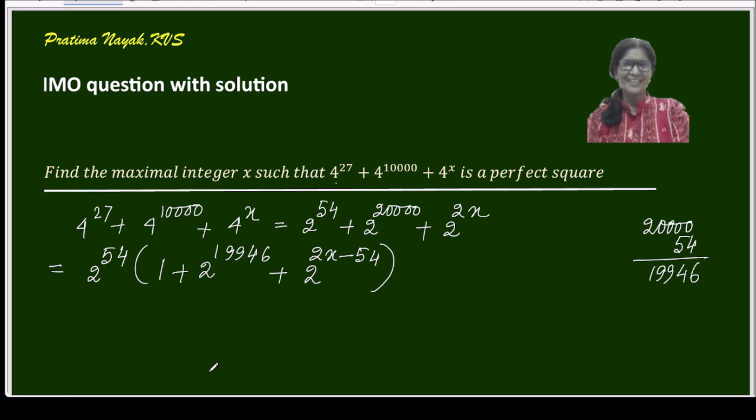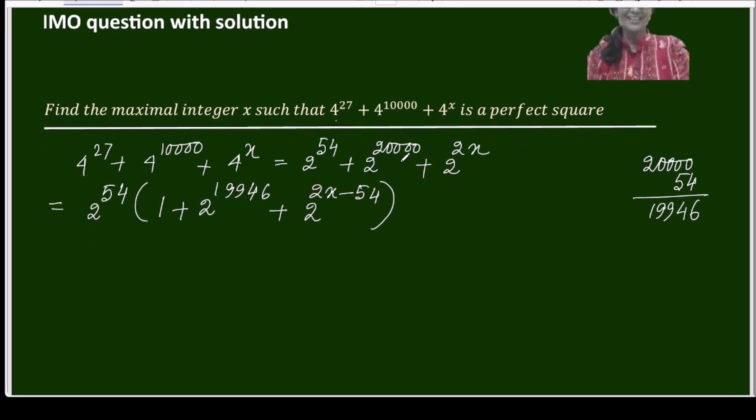Now this expression will be 2^54 times (1 + 2^19946 + 2^(2x-54)). Since 2^54 is already a square, the expression 1 + 2^19946 + 2^(2x-54) must be a perfect square.